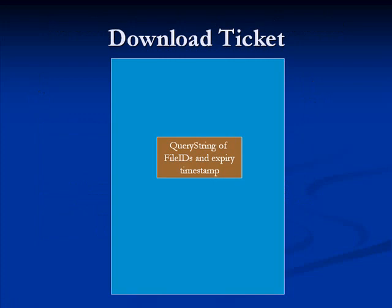In this slide we'll talk about how we generate the download ticket. The download ticket is generated on the application tier. When you as a TFS client request a bunch of files to be downloaded, the application tier creates a query string format of the file ID for each of those files. It also creates what we call an expected timestamp, which indicates how long the ticket is valid. By default, a generated ticket is valid for 24 hours.